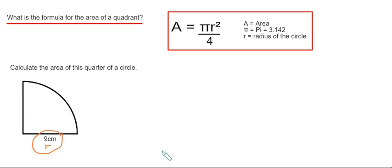So to begin with, let's just write our formula down. It's A equals pi r squared over 4.